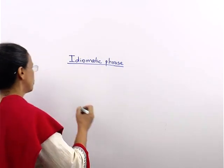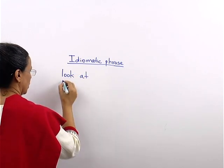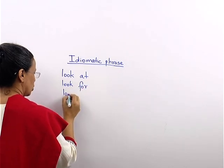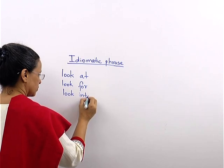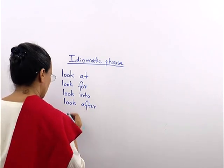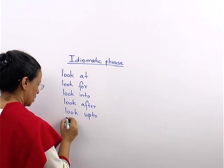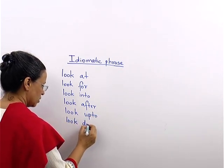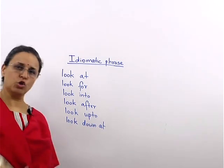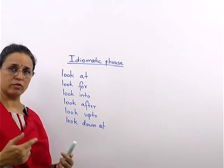Look at this. Suppose I say: look at, look for, look into, look after, look up to, look down at. Now if I tell you the meaning of 'look' you will say 'dekhna.' But there are so many different words formed with 'look' and all have different meanings.